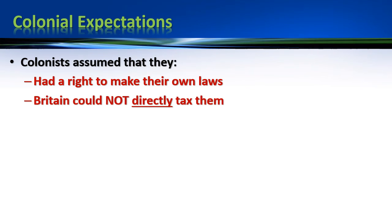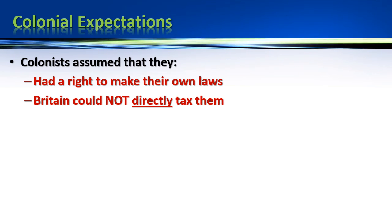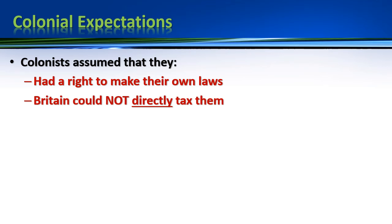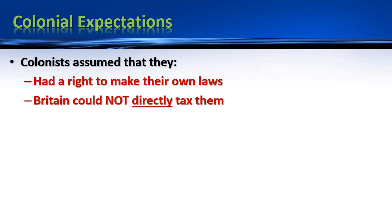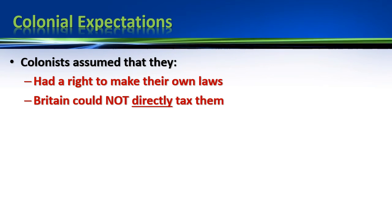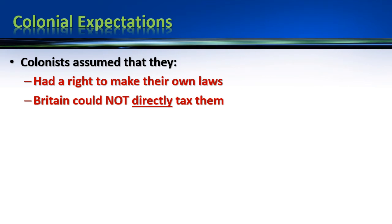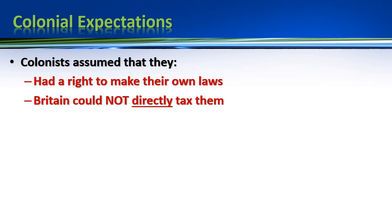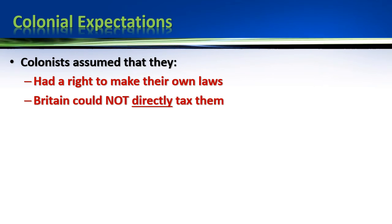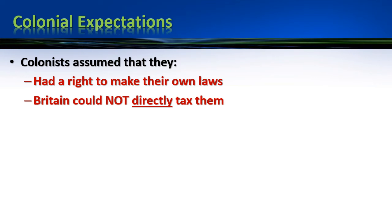What we get in the end is a set of expectations by the colonists after all these years of making their own laws. The expectations are two in number: one, that they can make their own laws — it's a right, not just a privilege given by England, and England cannot take that right away. And second, Britain cannot directly tax them because nobody in England is speaking for these colonists. The colonists don't have a voice in English lawmaking, so the colonists will speak for themselves and tax themselves.